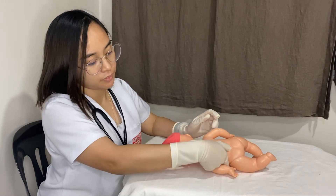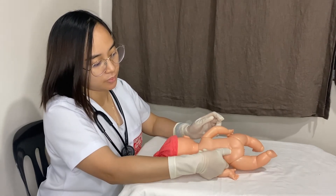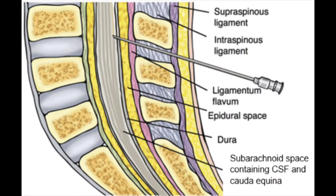You may find it helpful to hold the finger of your non-dominant hand at the space to mark the spot. This will also allow you to feel if the child is rotating away from you. From the point of view of a spinal needle, the structures penetrated from superficial to deep are as follows.